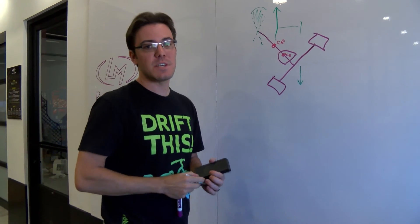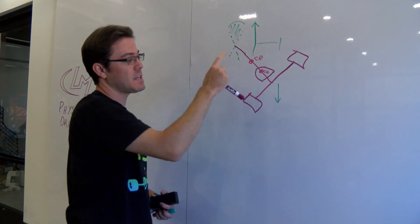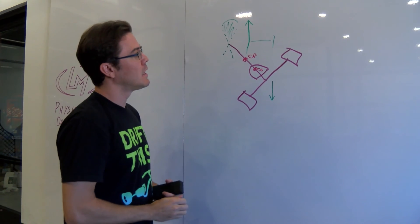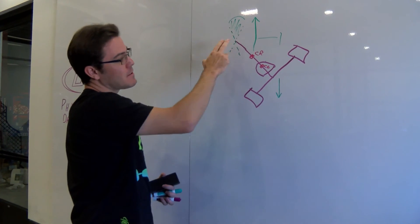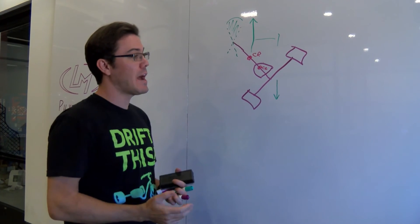Most people the first couple times they start out actually don't counter-steer enough - they would have the wheel too far to the left and they spin out several times. So that is the most basic physics behind how this works.